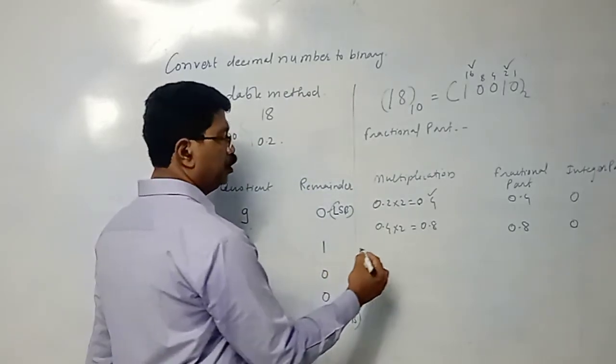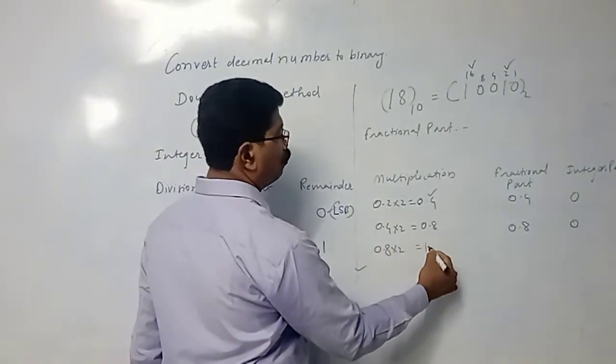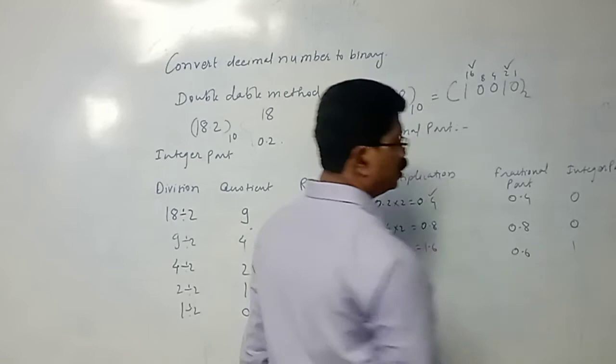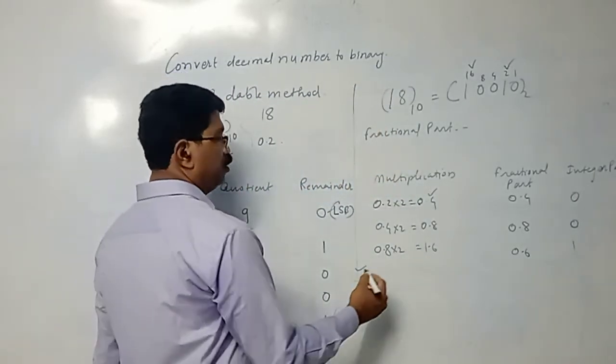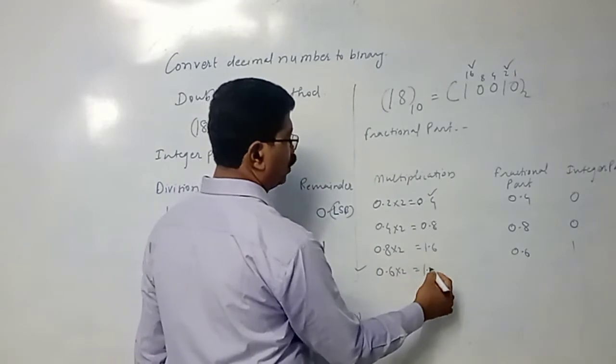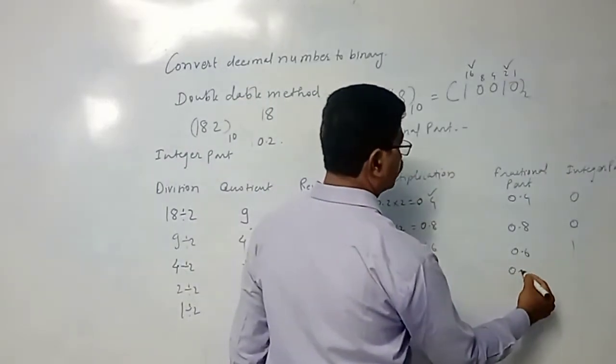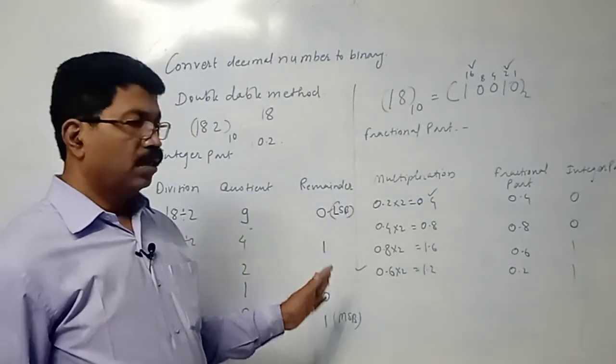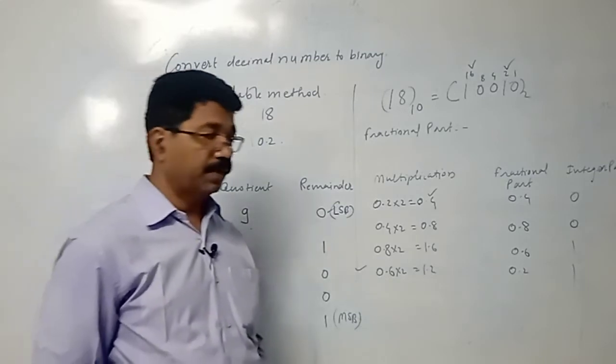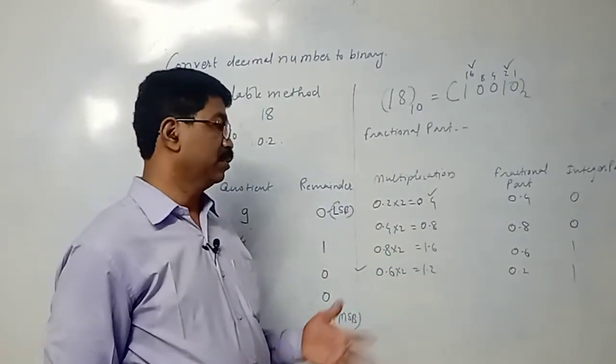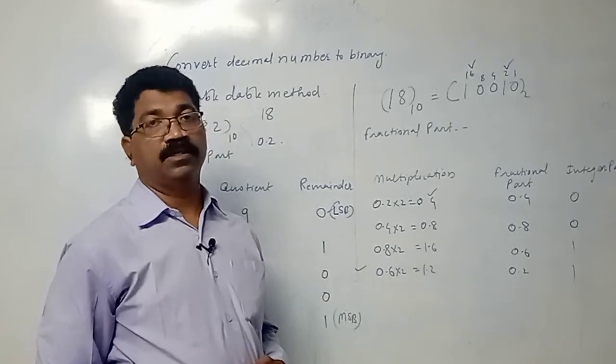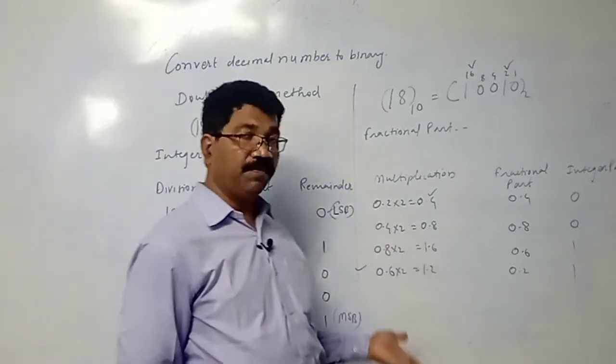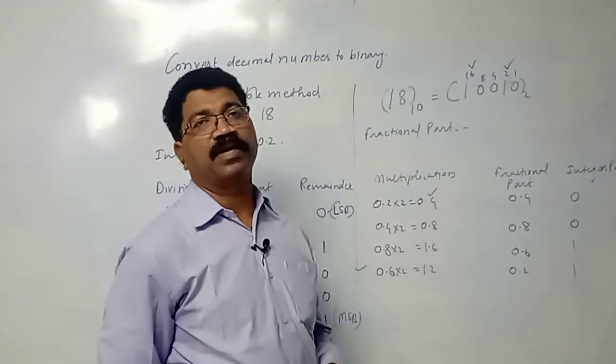Then multiply 0.8 by 2, it will be 1.6. So the fractional part is 0.6, integer part is 1. Then multiply 0.6 by 2, it will be 1.2, and 0.2 will be fractional part and 1 will be the integer part. Go on doing this 4 to 5 times. Just like rational and irrational numbers, the fractional part may be ending or non-ending, but you go for 4 to 5 to 6 and stop there.